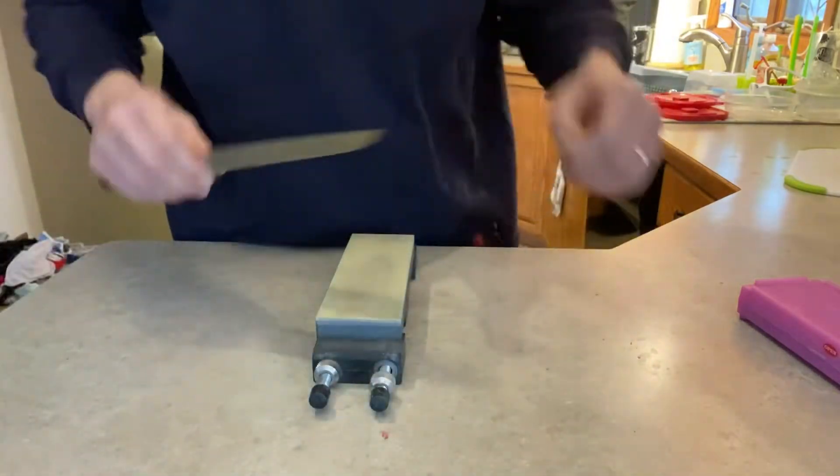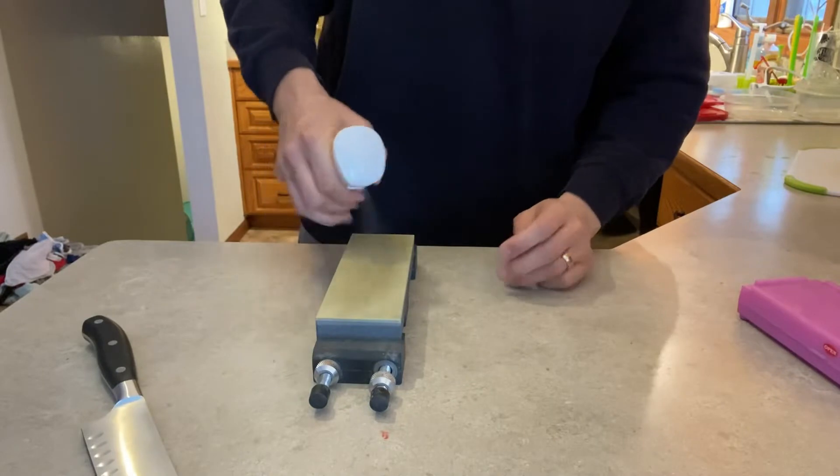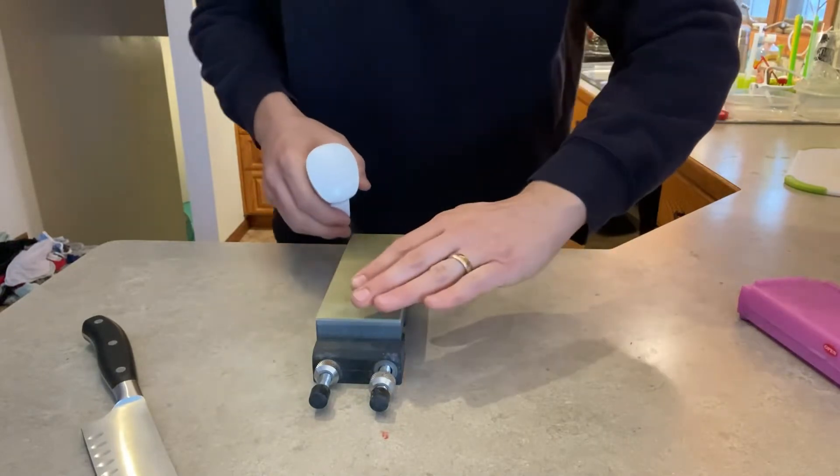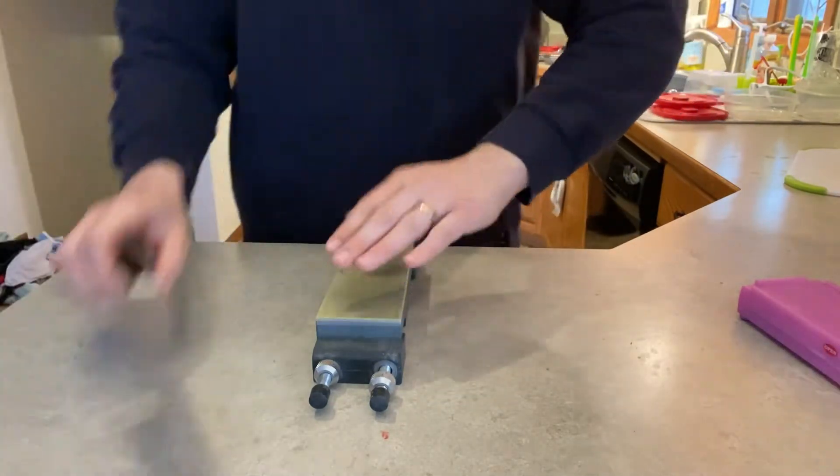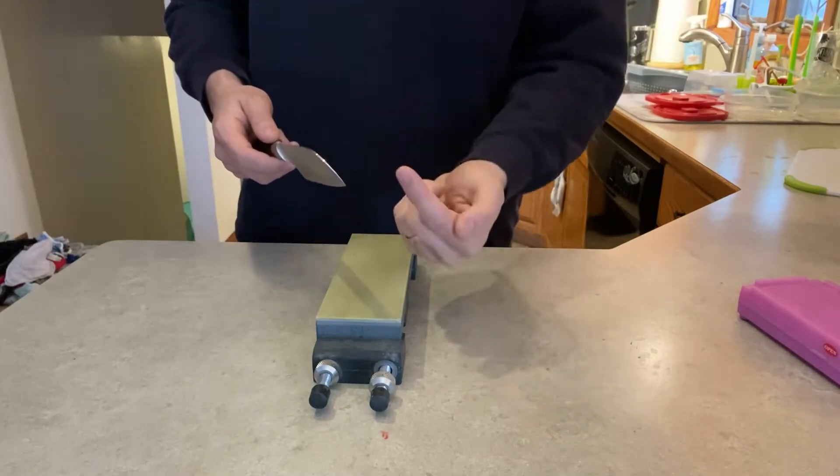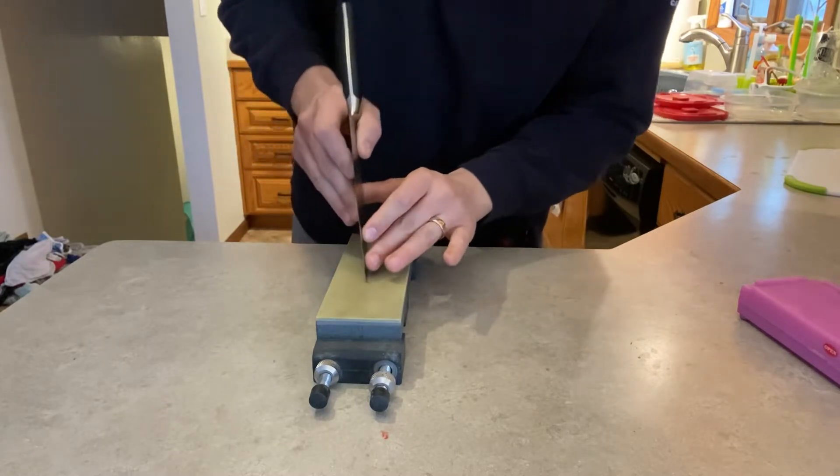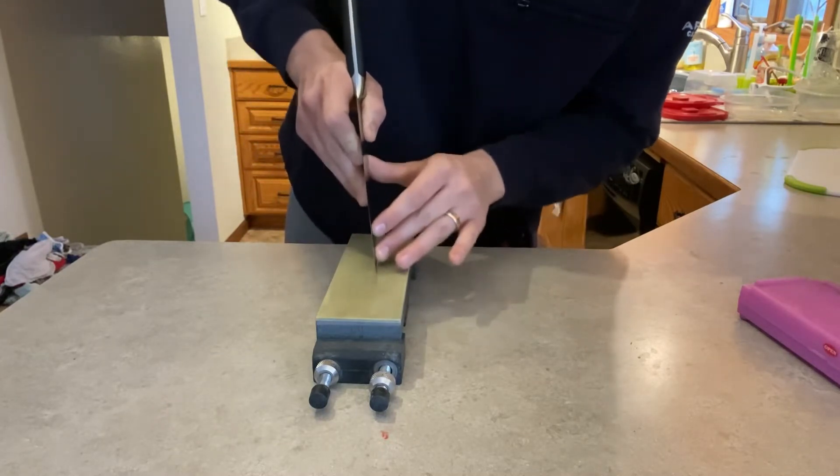So I've got the 400 grit super vitrified diamond water stone here. We're gonna do that tip repair. So I'm gonna be bringing the spine down to the tip instead of grinding the tip up because I want the flat profile. So I just wanted to show this.